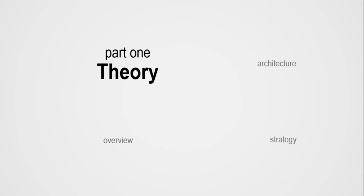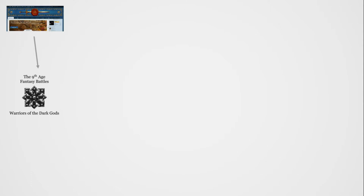Part one is about theory: an overview of the entire procedure, the architecture, and the strategy behind the whole operation. Our starting point is the 9th Age forum, from which we get the PDFs with the army books and we get the source files produced by the layout team.